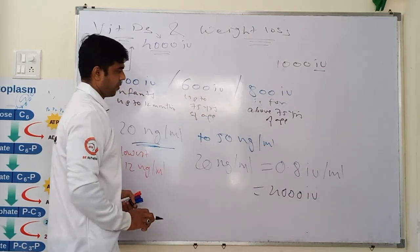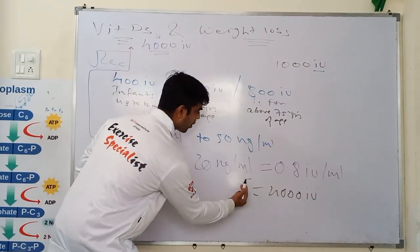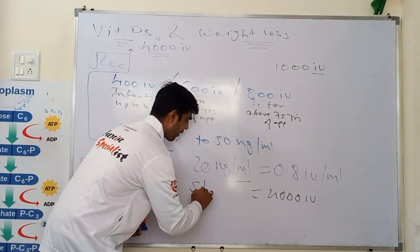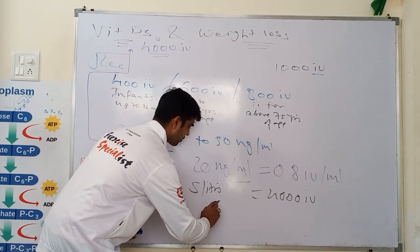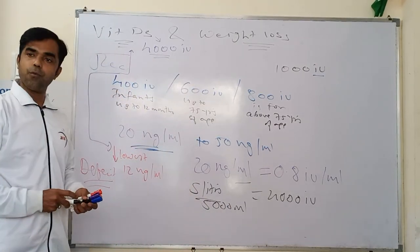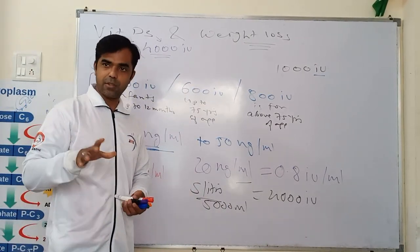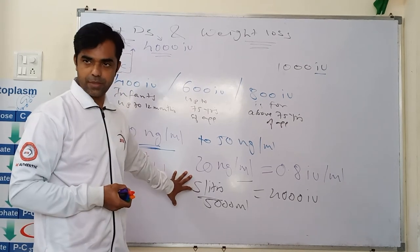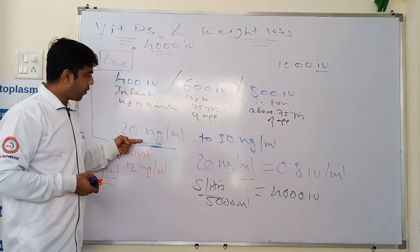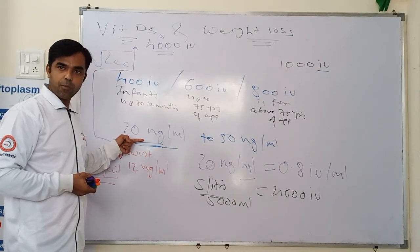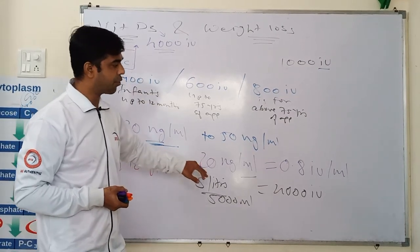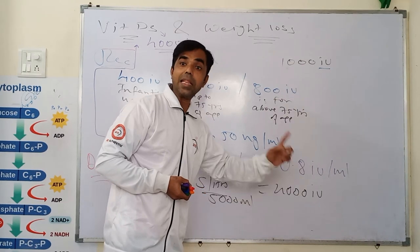Because when we talk about blood reports, normal individuals blood is 5 liters, somewhere 5000 ml. And if you want to take an average of total blood that is 4.7. So if you want to understand from this report which is normal for an individual, 20 nanogram per ml is going to be 4000 international unit.